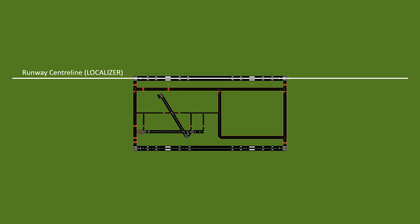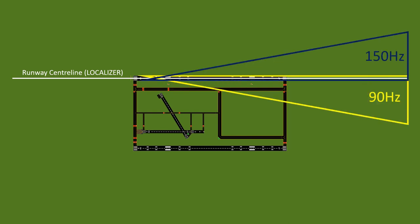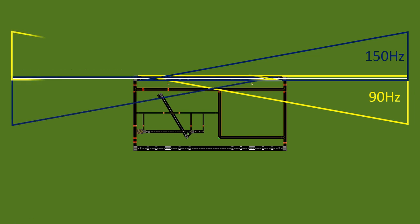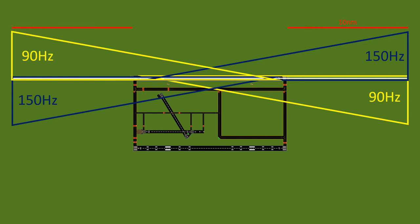We draw an imaginary line down the centerline of the runway — in ILS terms this is called the localizer. The localizer antenna emits two lobes of radio waves frequency modulated to 150 hertz on the right and 90 hertz on the left. These are unique to the ILS frequency you tuned your navigation radio to. The localizer at the opposite end is the same thing, just reversed.